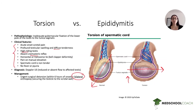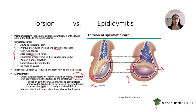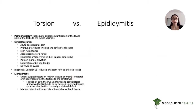Bilateral orchiopexy is commonly tested. The other side is also at risk because the inadequate gubernaculum fixation is often a bilateral defect — if torsion happens on one side, you're at risk on the other. So the correct management is unilateral surgical detorsion with bilateral orchiopexy. Manual detorsion is only appropriate if surgery is not available within about two hours — it is never the right answer when surgery is available.